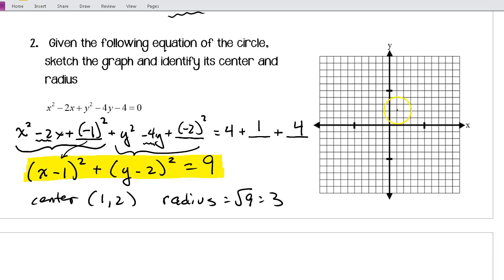And then we can graph it. So, I've got (1, 2). Radius of 3. I'll just go all 4 directions, 3 units. And then connect those. 1, 2, 3. 3 to the left. And then just kind of connect that with as smooth a circle as you can. Okay. So, that's number 2.